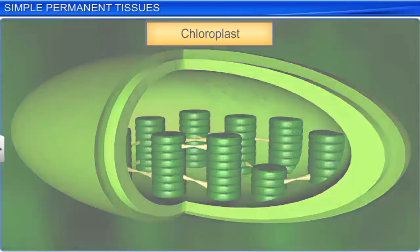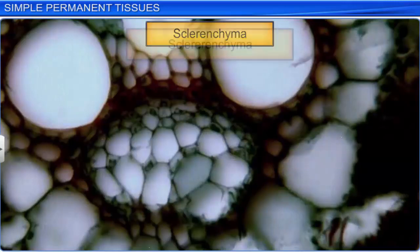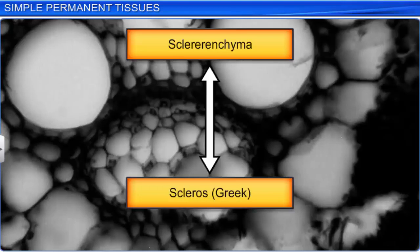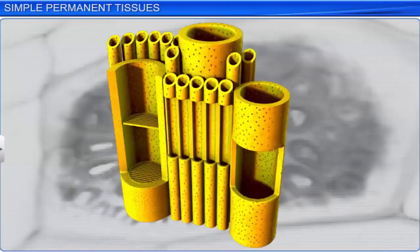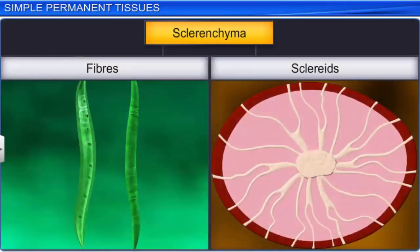Sclerenchyma provides stiffness or mechanical support to plant organs. The cell walls of sclerenchyma have a few or many pits. These cells are generally dead and without any protoplasts. Based on variation in form, structure, origin, and development, sclerenchyma tissue can be of two types: fibers and scleroids. Fibers are narrow, elongated, spindle-shaped, thick-walled cells with pointed ends. They usually occur in groups in various parts of the plant.